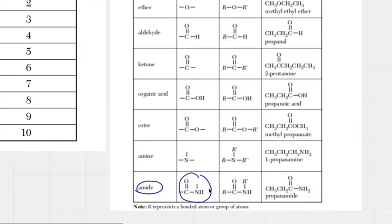If we are not sure how to name it, what we can do is we can look at the right part of the table and we can see an example. So here we have three carbons, and we have this functional group, C double bond O with N, and this is called propanamide. So the ending has to be amide. So that's what we're looking for.